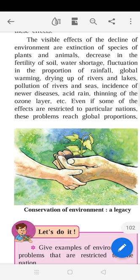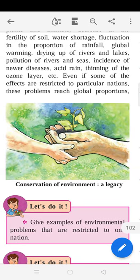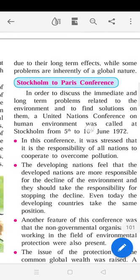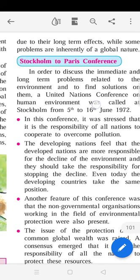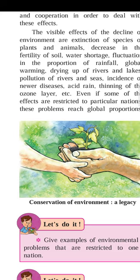The visible effects of the decline of environment include extinction of species of plants and animals, decrease in fertility of soil, water shortage, fluctuation in rainfall, global warming, drying up of rivers and lakes, pollution of rivers and seas, incidence of newer diseases, acid rain, and thinning of the ozone layer. Even if some effects are restricted to particular nations, these problems reach global proportions due to their long-term nature. For example, the Himalayan snow leopard is among critically endangered species.